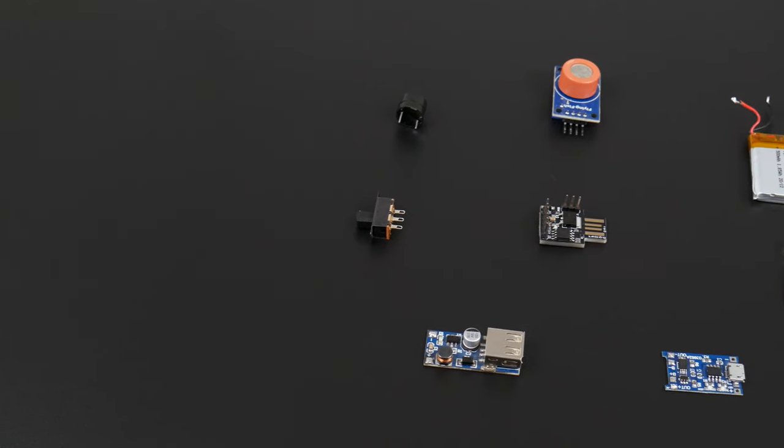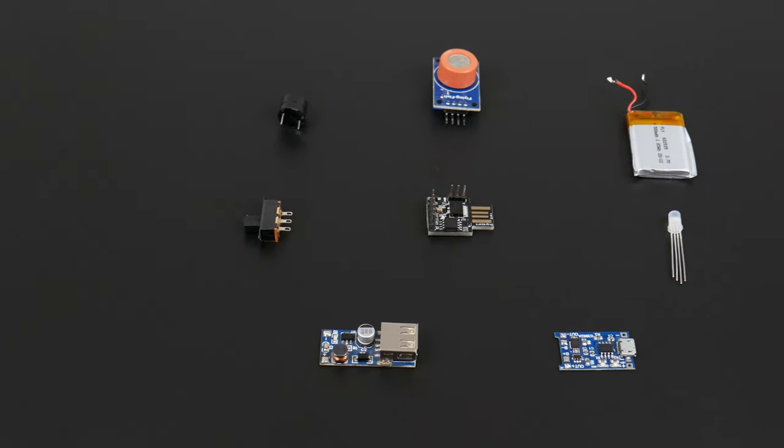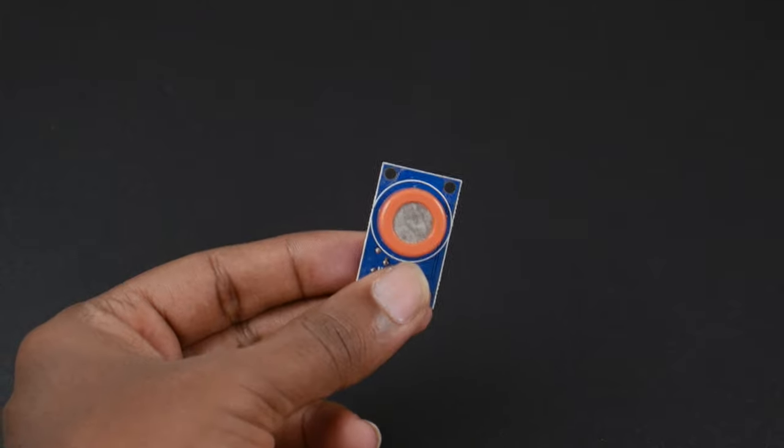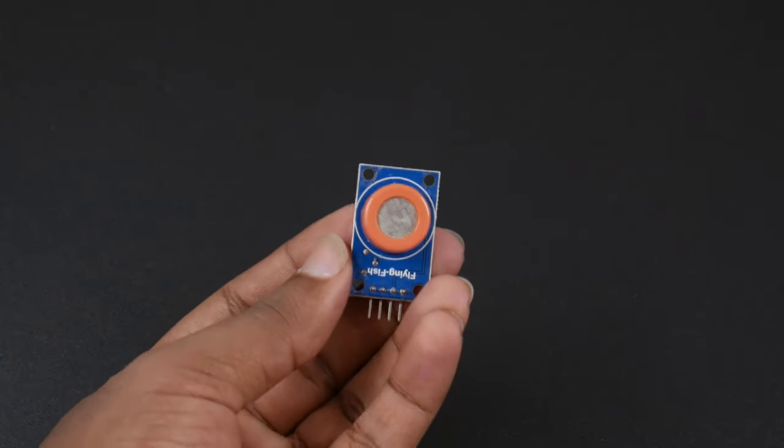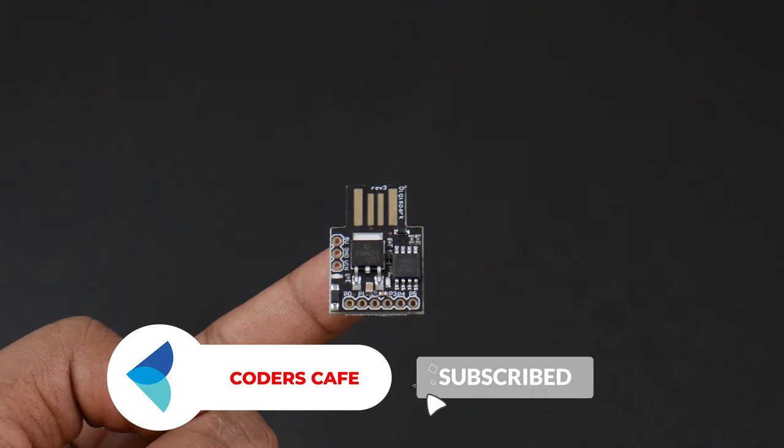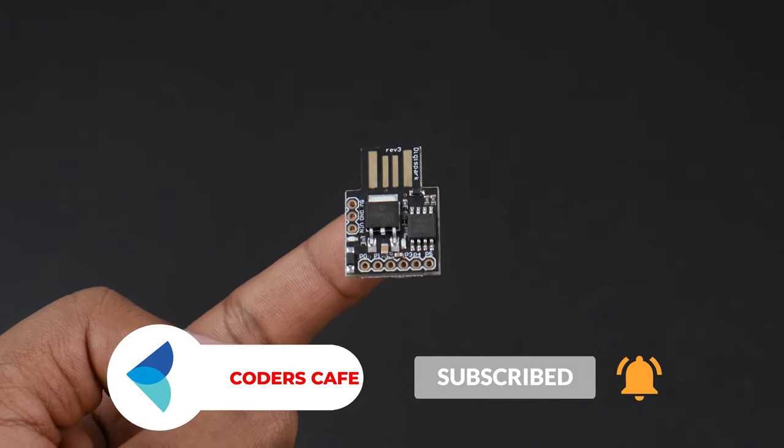So these are the major electronic components required for the build. MQ3 is the sensor that we use for detecting the presence of alcohol. Also we are using DigiSpark ATtiny85 as our MCU.